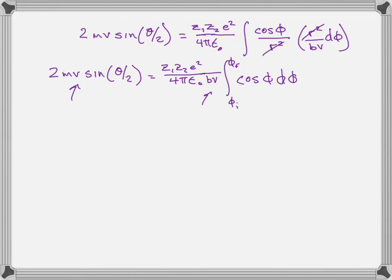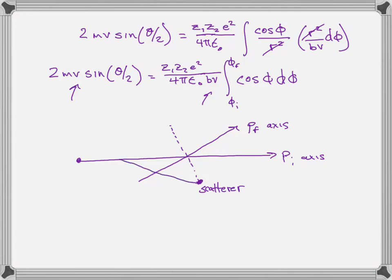In order to evaluate the integral, we need to know what phi I and phi F are, and actually, that's not so hard either. Remember, we've got the thing that's being scattered is coming in along the P initial axis, and it's being scattered along an axis, which we'll call the P final axis. The scatterer cuts that axis symmetrically, and the phi variable has to do with the fact that at some point, the thing being scattered notices the scatterer, so that would be phi initial, and at some point, it stops noticing it. That would be phi final.